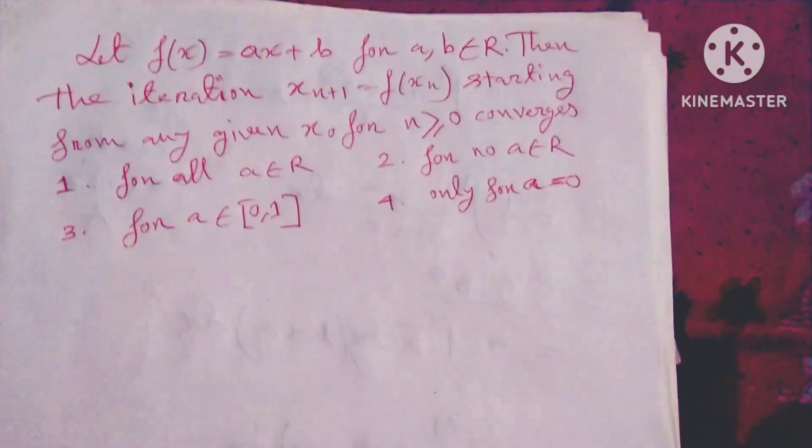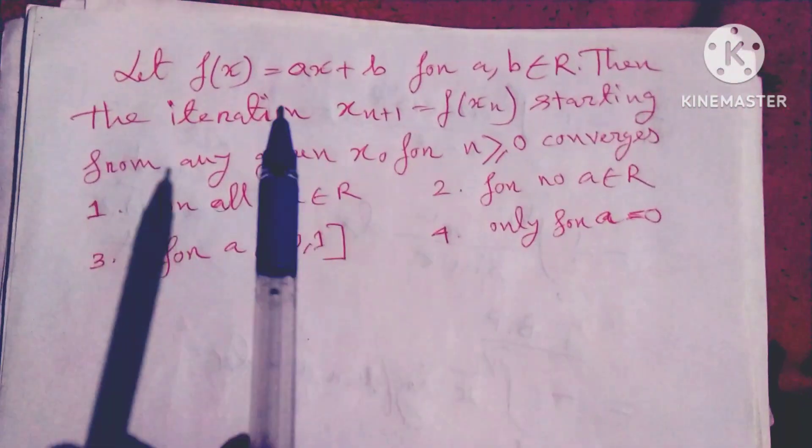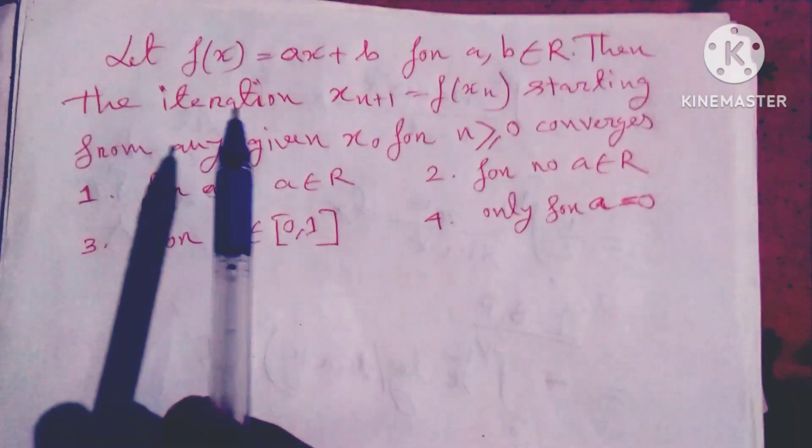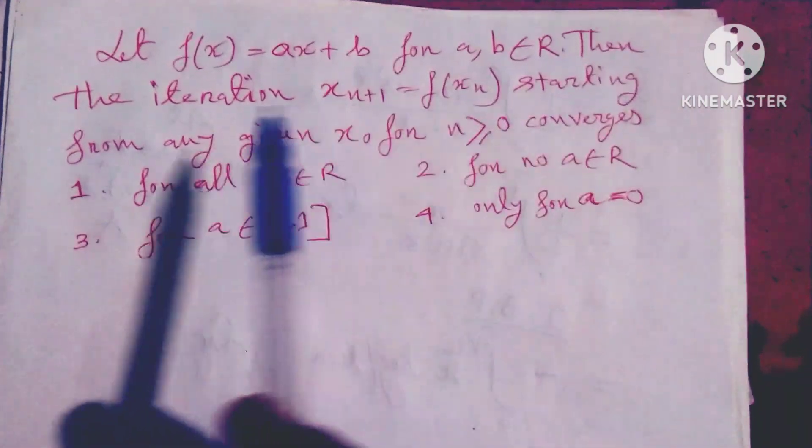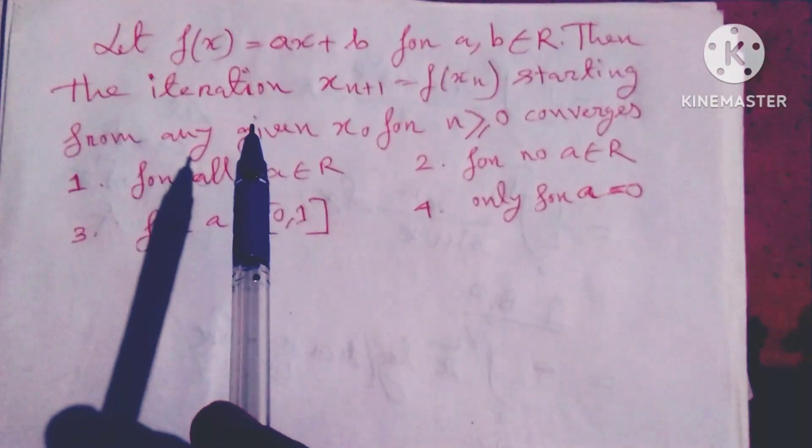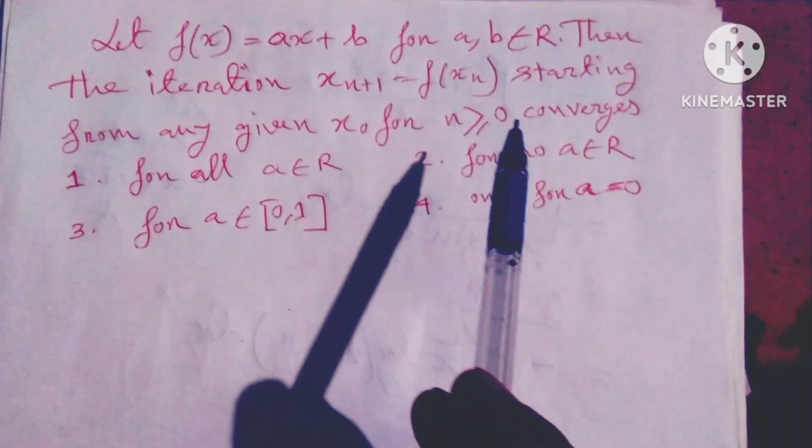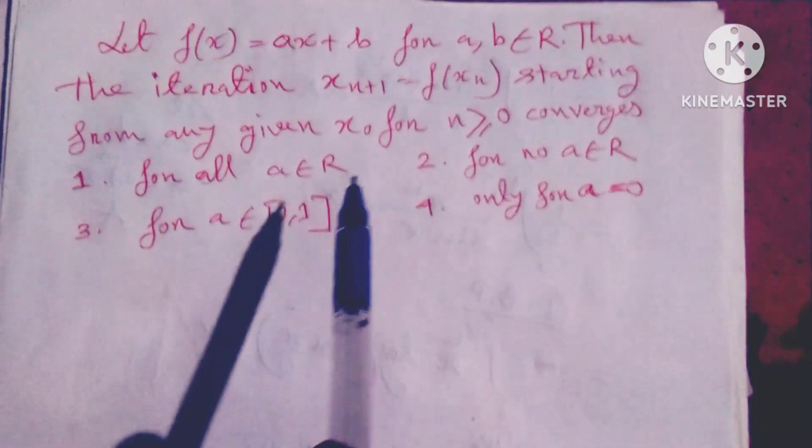Hello dear friends, welcome to my channel. Today's discussion is numerical analysis. Let f(x) = ax + b, where a, b belongs to R. Then the iteration x_{n+1} = f(x_n) starting from any given x_0...